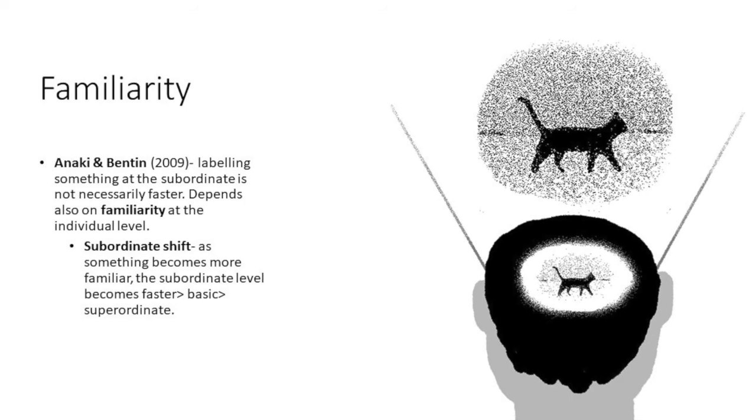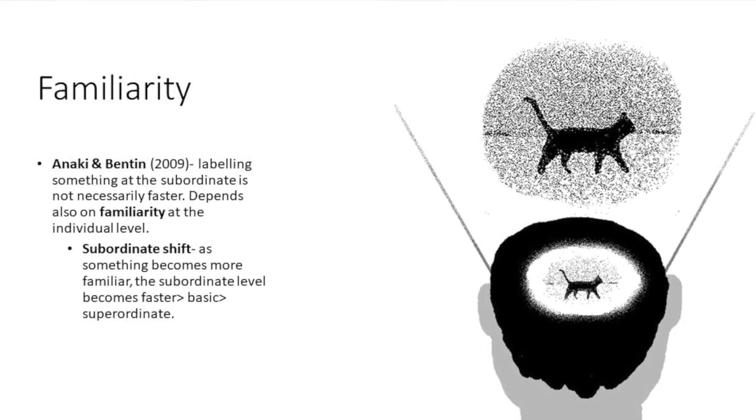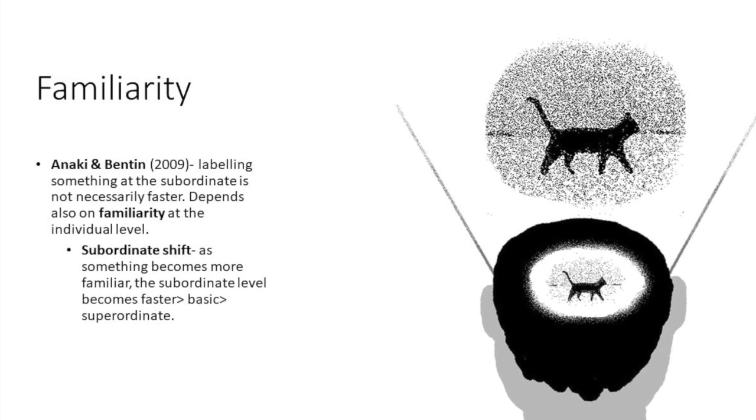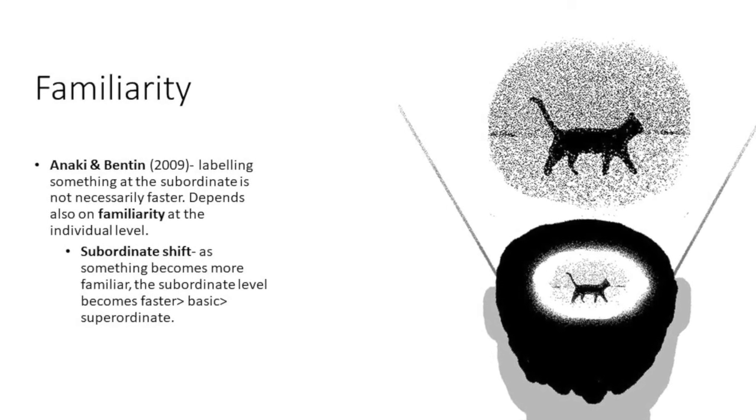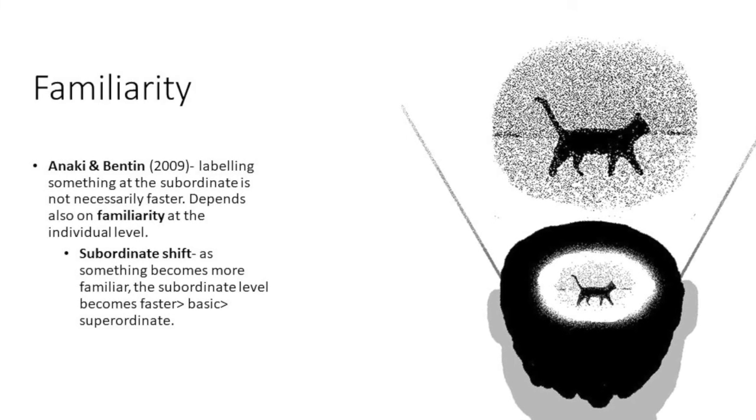Subordinate shift, as it is known, is when something becomes more familiar. The subordinate level becomes faster, which is greater than the basic and superordinate levels. So instead of speaking in generalities, experts become familiar with the specifics.